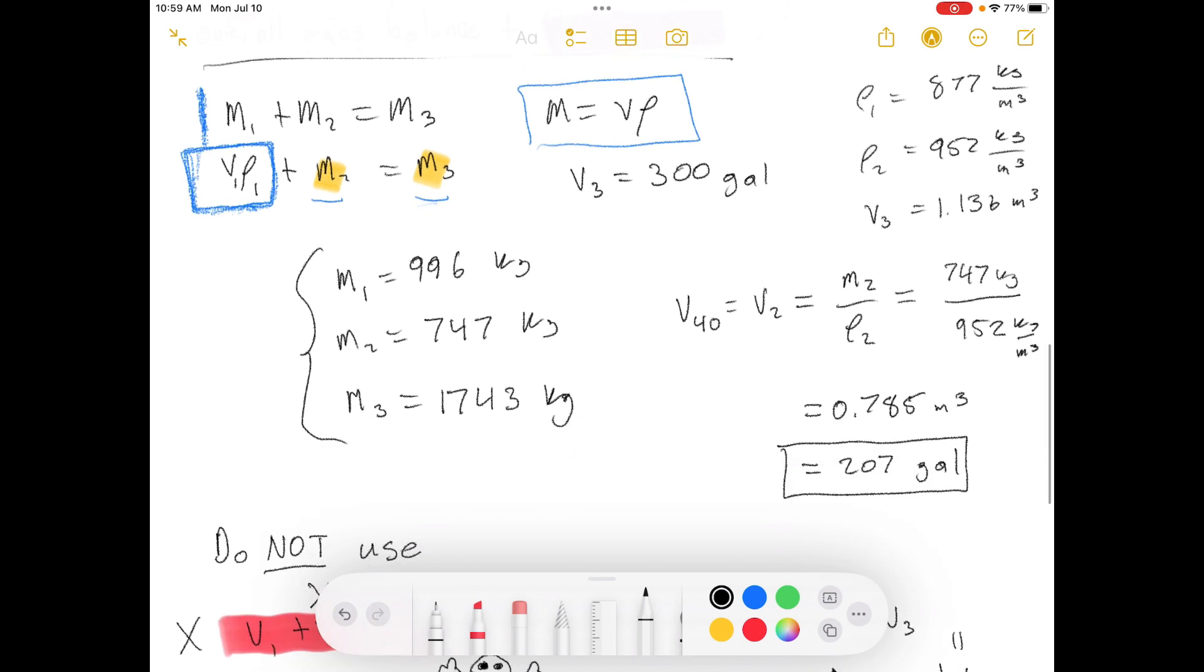The goal of this problem is to solve for what the volume of stream two is. We can solve that now because we know what mass two is and they gave us the specific gravity or the density of stream two. So you just solve these equations and you get this final result.